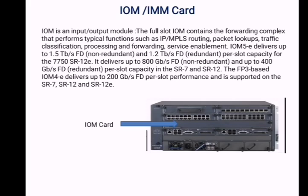Next is the Input/Output Module (IOM) and Integrated Media Module installed in this IPM PLS router. It has different versions — for example, IOM 5 can support capacity up to 1.5 terabit per second, and for redundant standby it secures 1.2 terabit per second speed per slot. For IOM on SR7 and SR12 routers, the capacity is 100 gigabit per second.